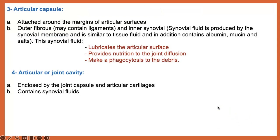The third essential structure is the articular capsule, which surrounds the articular surfaces. The articular capsule has two layers: the outer fibrous layer, which contains ligaments, and the inner synovial layer, which secretes synovial fluid. Synovial fluid is important for lubricating the articular surface and providing nutrition to the joint through diffusion and also for phagocytosis of debris.